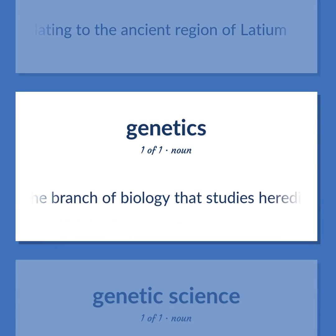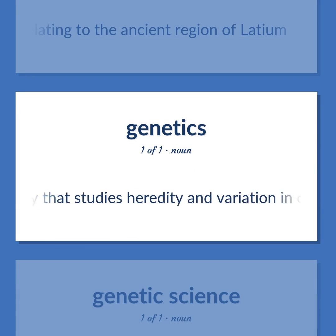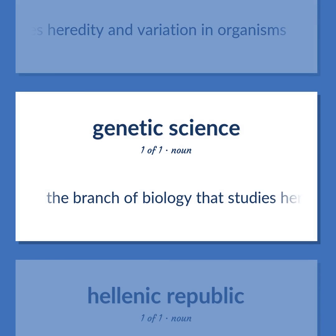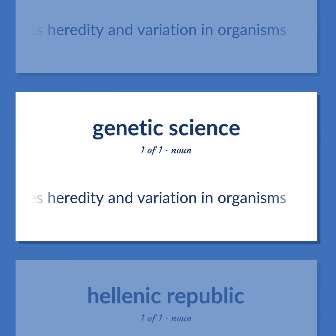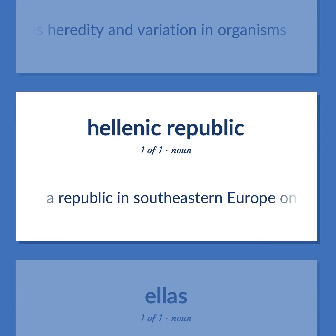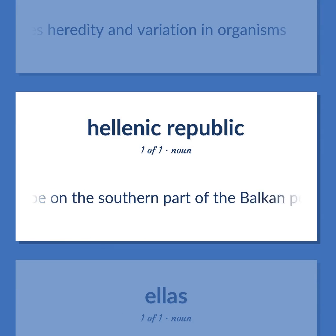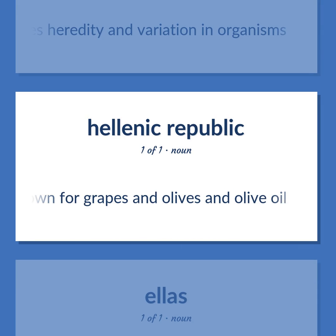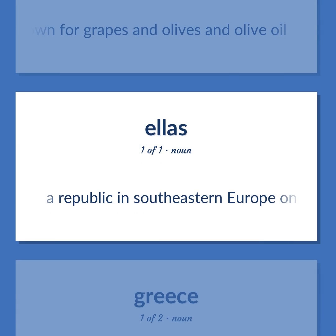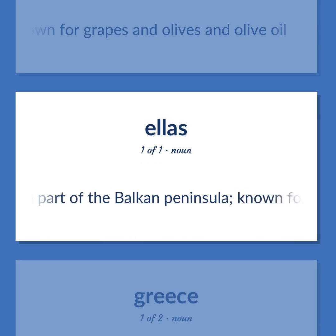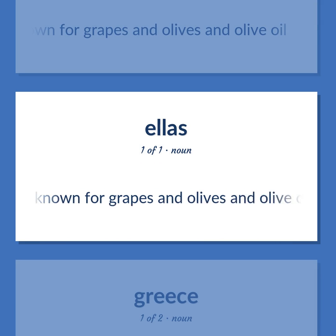GENETICS — The branch of biology that studies heredity and variation in organisms. GREEK — A republic in southeastern Europe on the southern part of the Balkan Peninsula, known for grapes and olives and olive oil.